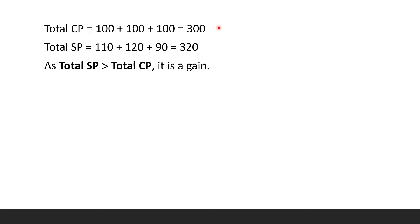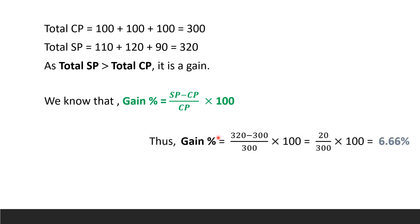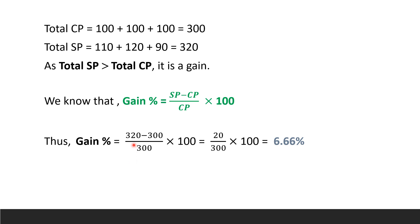Thus, the total cost price equals 100 plus 100 plus 100, that is 300. The total selling price equals 110 plus 120 plus 90, that is 320. As the total selling price is greater than the total cost price, it is a gain. Gain percentage equals selling price minus cost price divided by cost price into 100. Thus, gain percentage equals 320 minus 300 divided by 300 into 100, which equals 6.66%. Therefore, the right answer is option D.